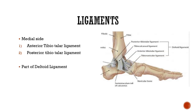There are ligaments we touched upon in the ankle fracture lecture. On the medial side, the talus has the deltoid ligament, consisting of two parts: the anterior tibiotalar ligament and the posterior tibiotalar ligament. So on the medial side there are these two ligaments — the anterior tibiotalar and the posterior tibiotalar.